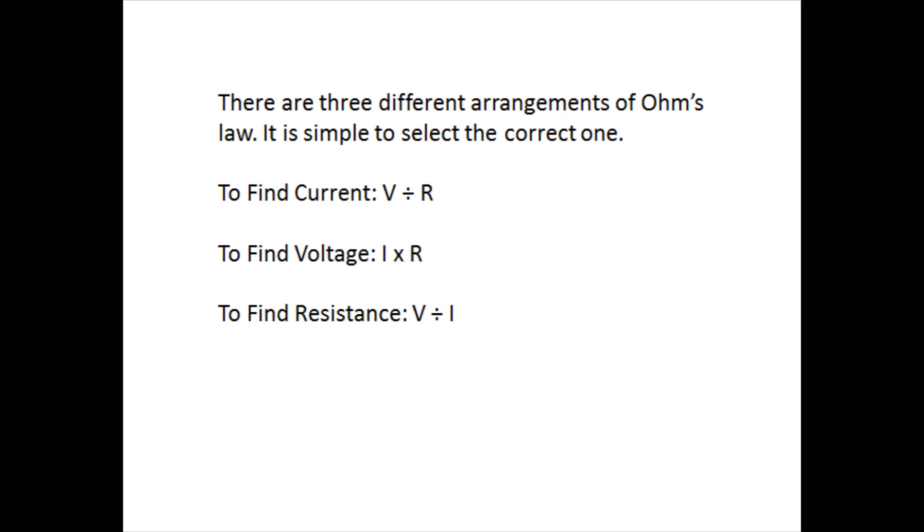There are three different arrangements of Ohm's Law. It is simple to select the correct one. To find current, it's voltage divided by resistance. To find voltage, it's current times resistance. To find resistance, it's voltage divided by current.